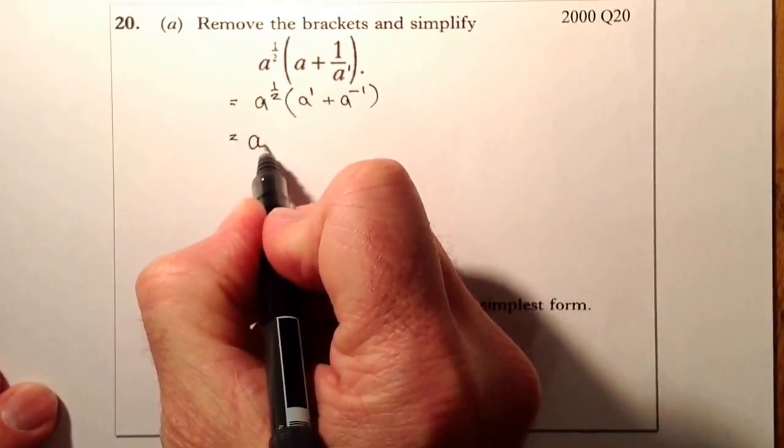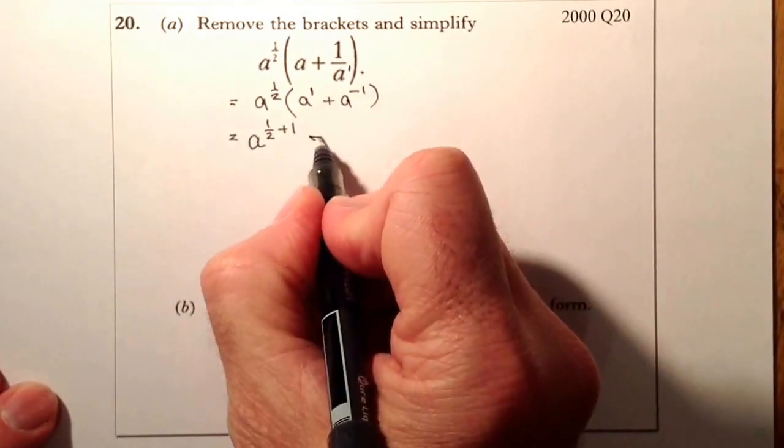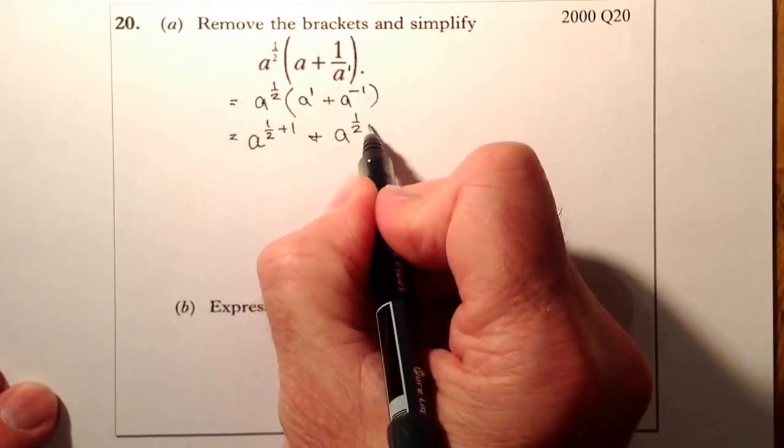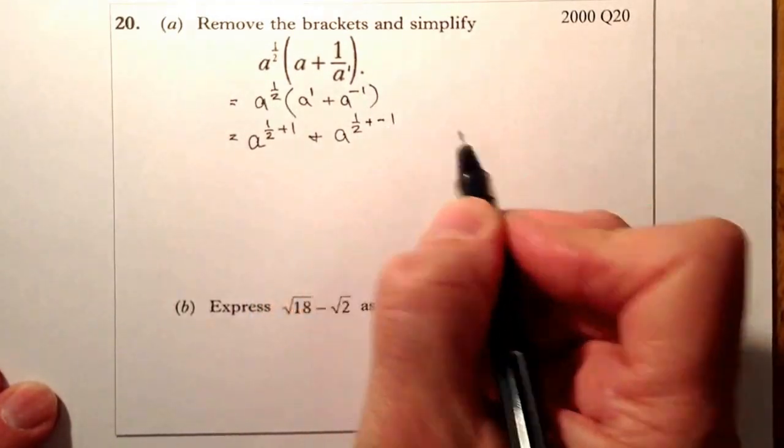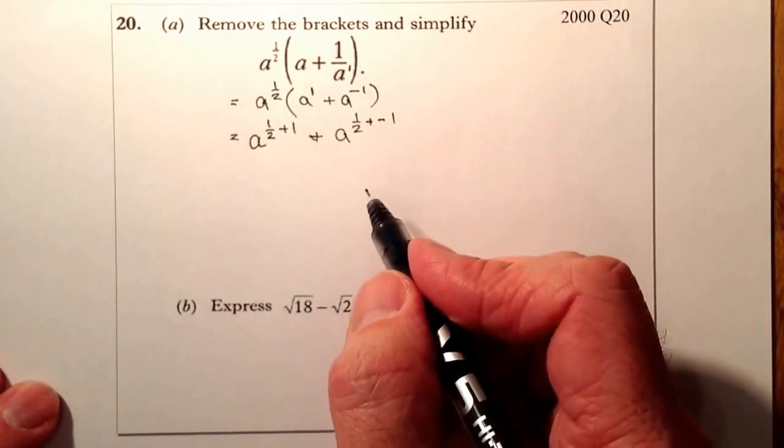So let's go for that. So that's going to be a to the power of 1 half plus 1, and I've got plus a to the power of 1 half, and I'm going to be plus minus 1. So I'm just going to be subtracting 1 away from that. And remember just the 1 is equal to 2 over 2.